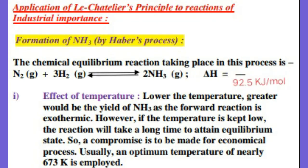The chemical equilibrium reaction taking place in Haber's Process is: 1 mol of Nitrogen gas combines with 3 mols of Hydrogen gas. This reaction is reversible and maintains equilibrium, giving 2 mols of Ammonia gas. This reaction is exothermic — the amount of heat released is 92.5 kJ per mol, so ΔH = −92.5 kJ/mol. The negative sign of ΔH indicates that heat is released during the formation of Ammonia by combining Nitrogen and Hydrogen gas.